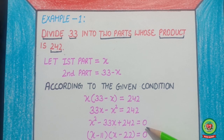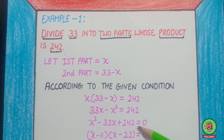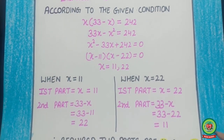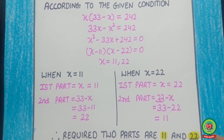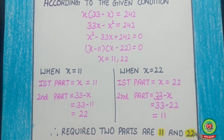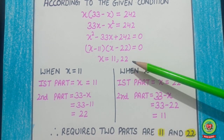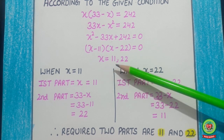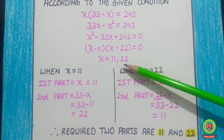Now, from here we are going to solve this quadratic equation by factorization method. You can also solve by discriminant method or by completing the square method. From here, the value of x equals 11 and 22.